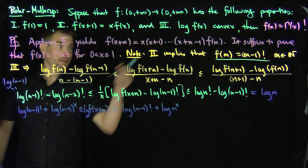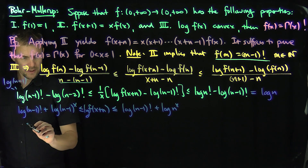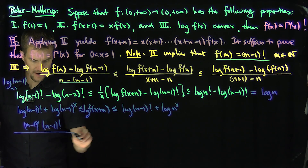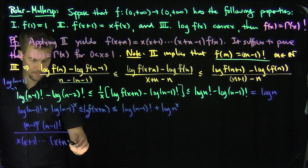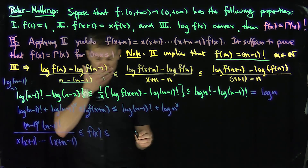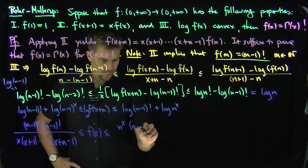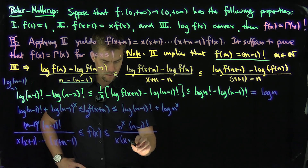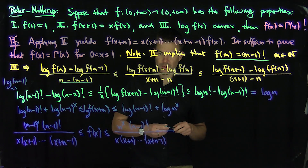Using property 2 to divide by the product expression and then exponentiating, we get: [n^(x−1) · (n−1)!] / [x·(x+1)·...·(x+n−1)] ≤ f(x) ≤ [n^x · (n−1)!] / [x·(x+1)·...·(x+n−1)]. Now we make a small trick: we multiply top and bottom by n and (x+n) respectively.